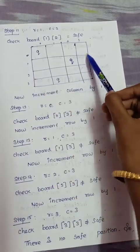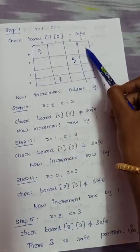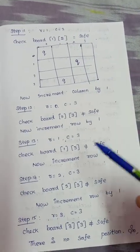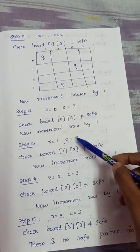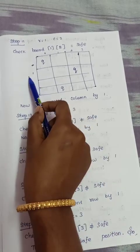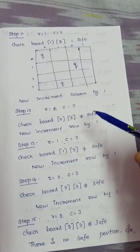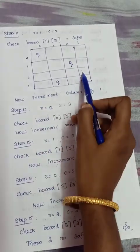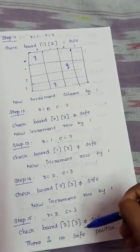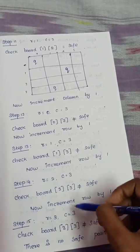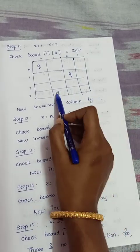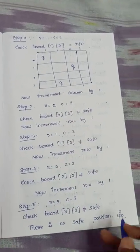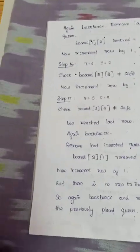We check board[0][3] — unsafe. Increment row to 1: board[1][3] — unsafe. Increment row to 2: board[2][3] — unsafe. Increment row to 3: board[3][3] — unsafe due to row attack. There is no safe position in this column, so we backtrack again.